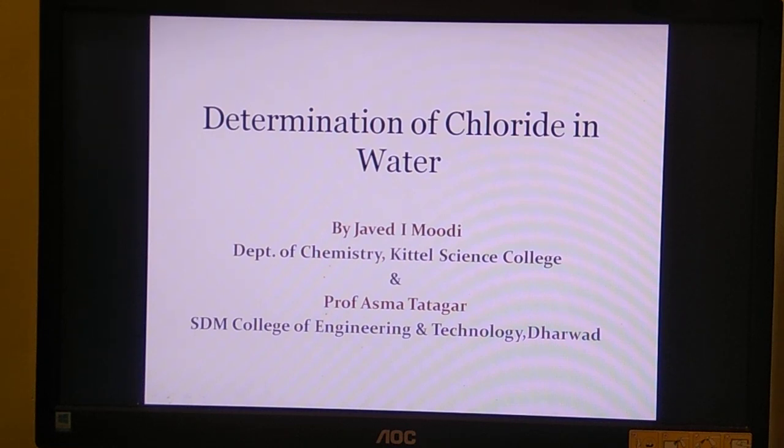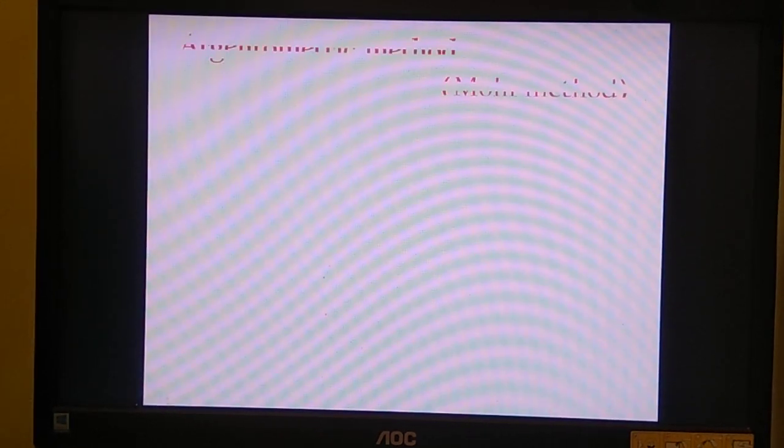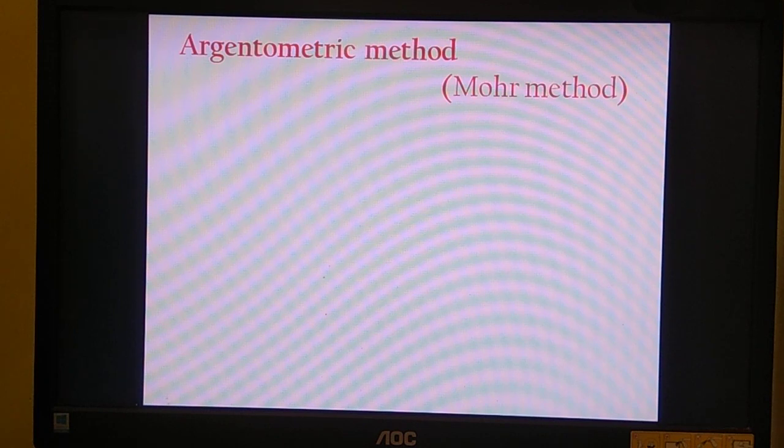Argentometric analysis is a type of volumetric analysis. It is also called as Mohr's titration or Mohr's method. Why is it called Argentometric method? Because the titrant used, the sample used in the burette, is silver nitrate. Silver has the IUPAC name Argentum, hence the name Argentometric method. This method was first designed and developed by Carl Mohr, hence it is also called Mohr's method.